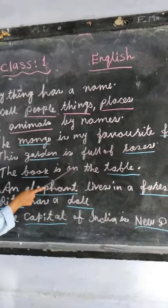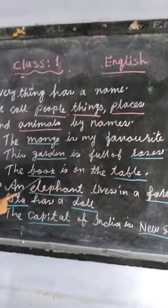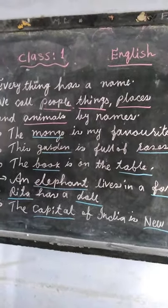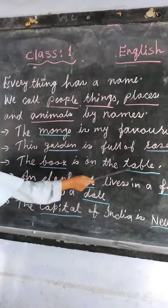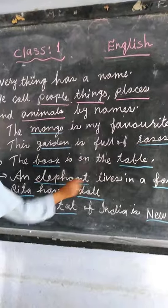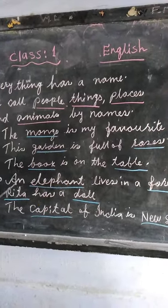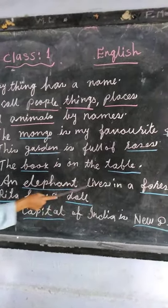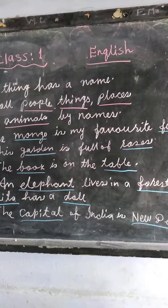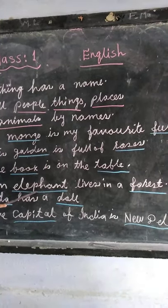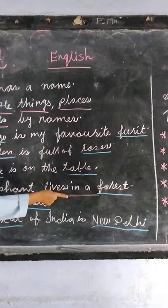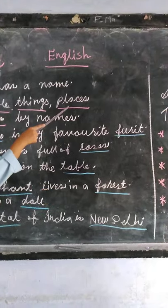Number 3: The book is on the table. Book is a thing, table is another thing — two naming words. Number 4: An elephant lives in the forest. An elephant is the name of an animal. Forest is the name of a place.